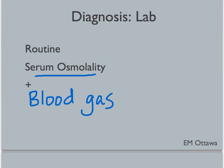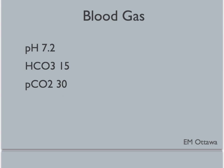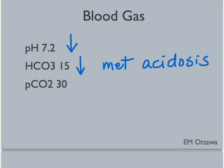Let's say we have a patient who has ingested ethylene glycol. Their blood gas might come back looking like this: the pH is low because the patient is acidotic, and it's acidotic because their bicarb is low, leading to a metabolic cause for acidosis. In order to compensate for this metabolic acidosis, the patient will try to blow off their CO2, leading to a low pCO2 as well.